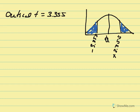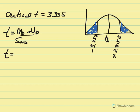We can calculate our T value. T equals mD minus muD over estimated standard error of the mean difference. Our mean difference equals 3, muD equals 0 from the null stating no difference between conditions, and estimated standard error equals 0.5. So T = (3 − 0) / 0.5 = 6.